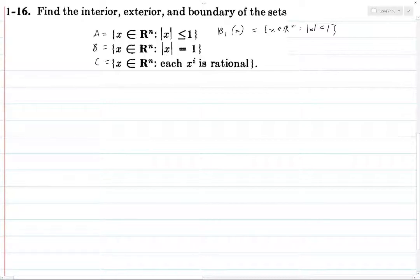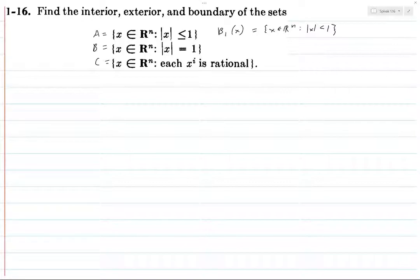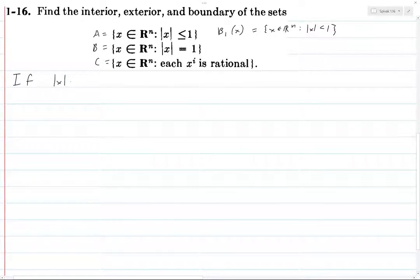We're going to prove that B₁(X) is the interior of A. So given any x in B₁(X), we want to prove that there's an open rectangle around that point contained in A. So if the norm of x is less than one, how are we going to choose this neighborhood?